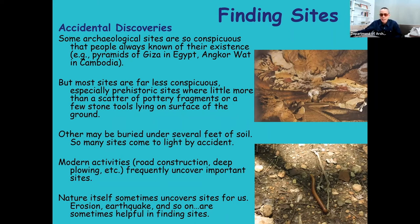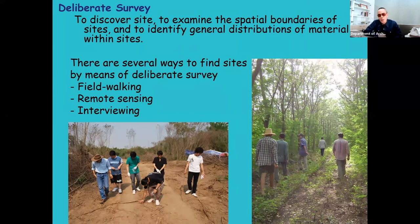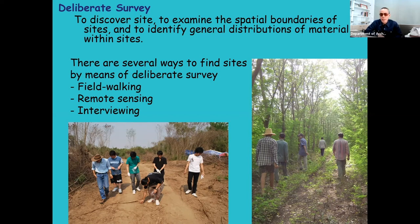You want to do your own site survey to look for sites. You can do survey by means of what we call field walking, or you can use remote sensing methods, or you can talk to and interview people to find sites. For interviews, sometimes people who live near the landscape and environment you are interested in might know something about the place. Sometimes we call them 'accidental archaeologists' because they know the area, the landscape, and even some objects you are looking for.